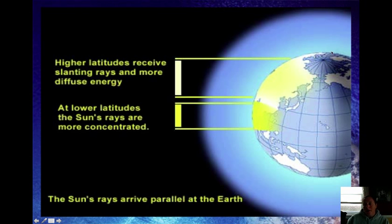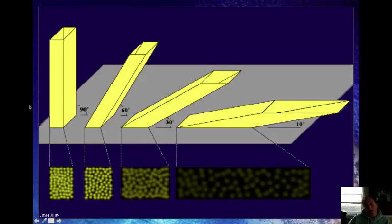So higher latitudes, which are closer to the poles, will be more slanted, and there will be less concentrated energy, which results in cooler temperatures. And locations closest to the equator have more concentrated, higher angle insulation, which leads to warmer temperatures. And this picture also shows how the direct light coming in is more concentrated, and the more it gets slanted, the more that energy is spread out over a wider area, which means less energy is being absorbed per area.